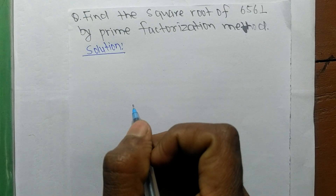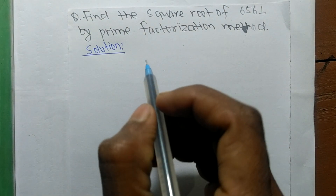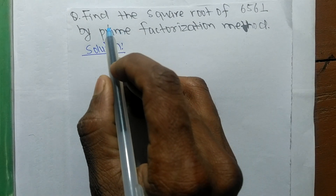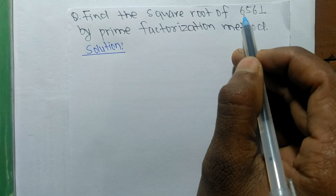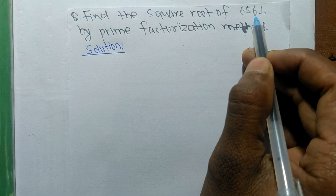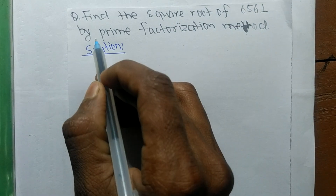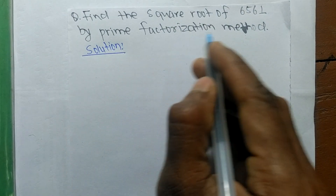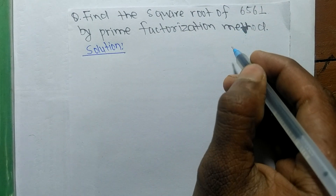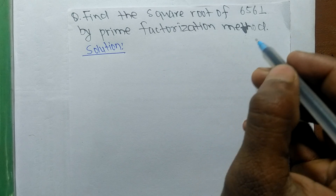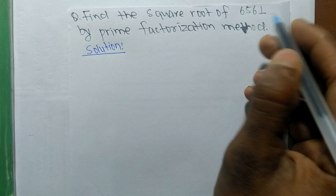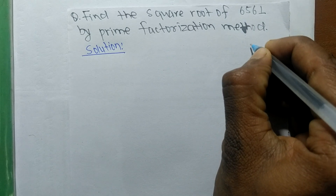Today in this video we shall learn to find the square root of 6561 by the prime factorization method. First of all, we have to find out the prime factors of 6561.